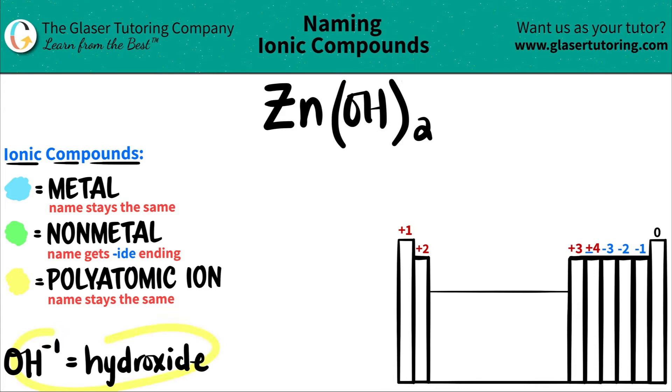So I wrote down the one that we're going to be using here. So just memorize this. Flash card it out, do whatever you got to do to just memorize that OH. Anytime that you see OH, it always has a negative one charge. It gains one electron and it's always called hydroxide. So here it is. Here's OH, found that polyatomic ion.